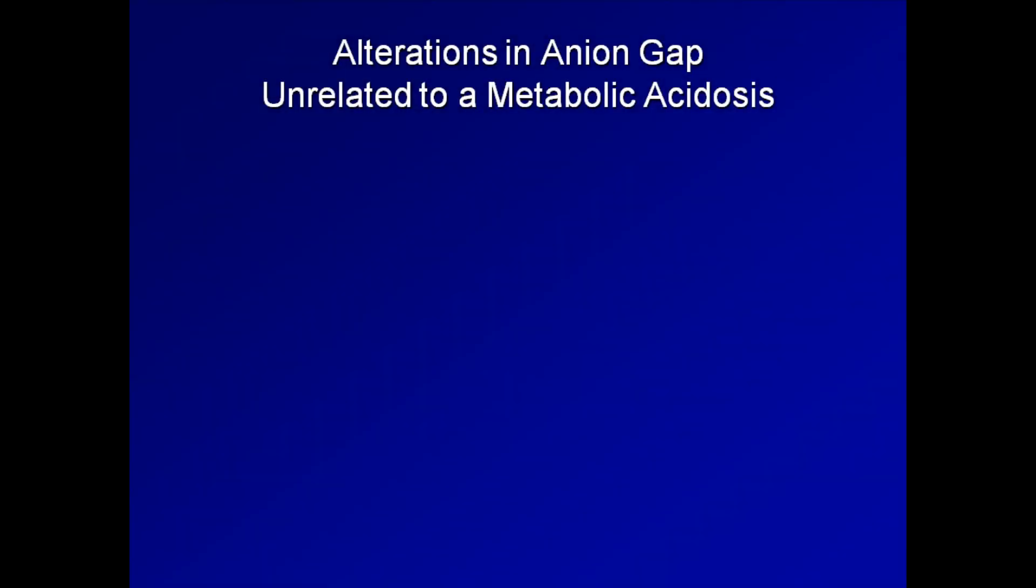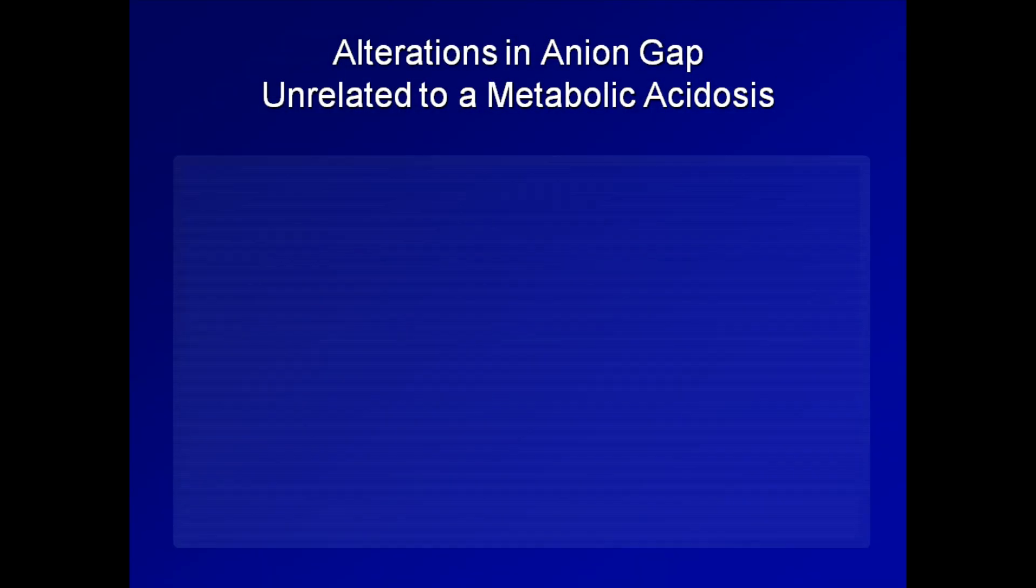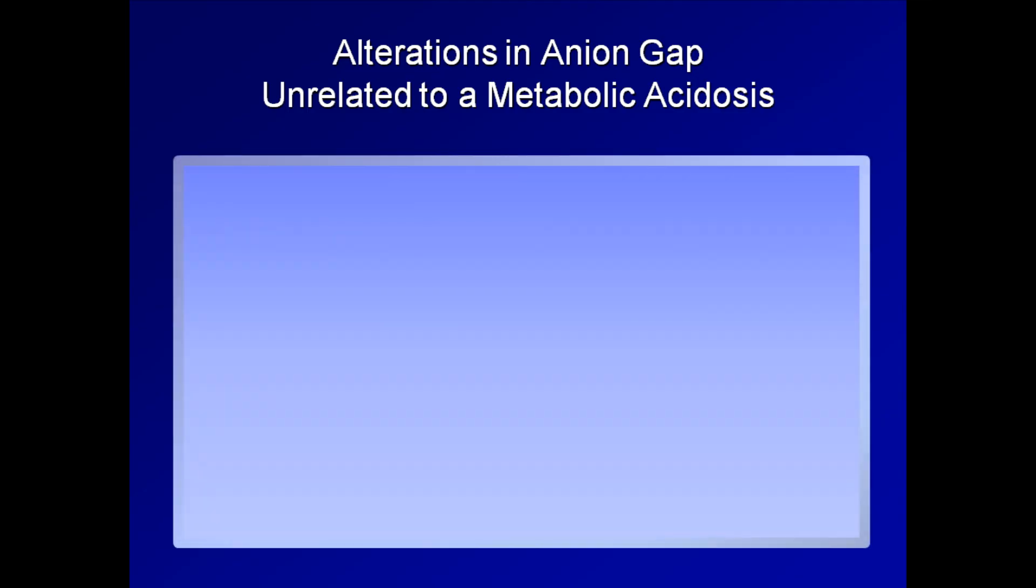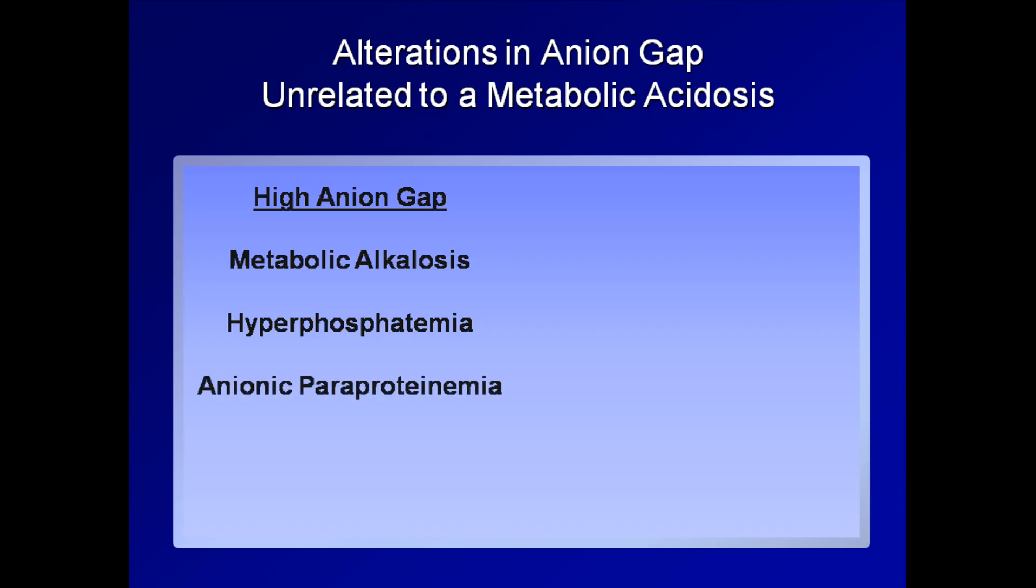There are a number of pathologic states that can result in alterations in the anion gap that are completely unrelated to a metabolic acidosis. A high anion gap can be caused by metabolic alkalosis by a subtle secondary increase in albumin concentration, as well as an increase in the negative charge of each albumin molecule in the presence of higher pH. Phosphate is an unmeasured anion, which is not accounted for in the calculation of anion gap. Thus, severe hyperphosphatemia may cause a mild anion gap increase. Lastly, an anionic paraproteinemia could also do this, though this is rare as most paraproteins are either electrically neutral or of positive charge.